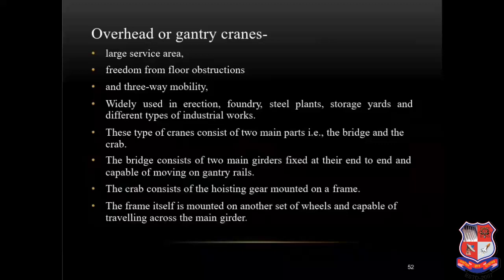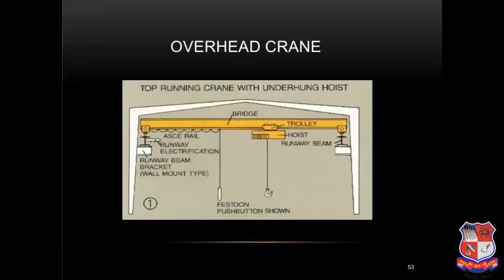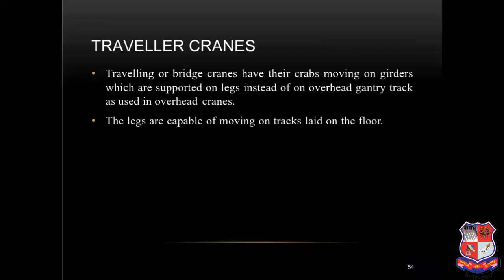Overhead or gantry cranes offer a large service area, freedom from floor obstruction and three-way mobility. Widely used in erection, foundry, steel plants, storage yards and different types of industrial works. This type consists of two main parts: the bridge and the crab. The bridge consists of two main girders fixed at their ends and capable of moving on gantry rails. The crab consists of hoisting gear mounted on a frame, which is mounted on another set of wheels and capable of traveling across the main girders. Traveling or bridge cranes have their crabs moving on girders supported on legs instead of on overhead gantry track, and the legs are capable of moving on track laid on the floor.